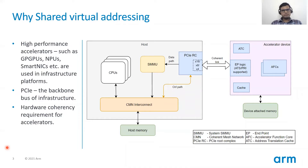Various infrastructure platforms today deploy a number of hardware accelerator devices such as general purpose GPUs or smart NICs. These devices usually sit on the PCIe bus which forms the backbone bus. Now, these devices can also be IO virtualized in a typical infrastructure system using various IO virtualization techniques such as PCIe pass-through or direct IO.